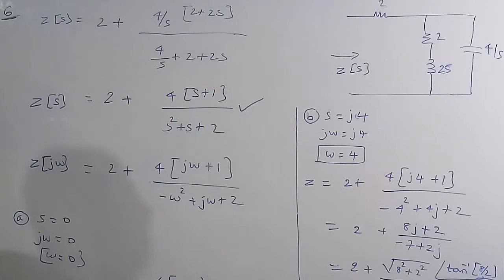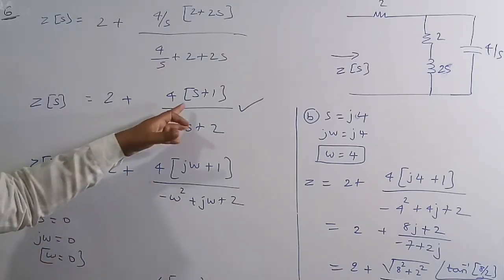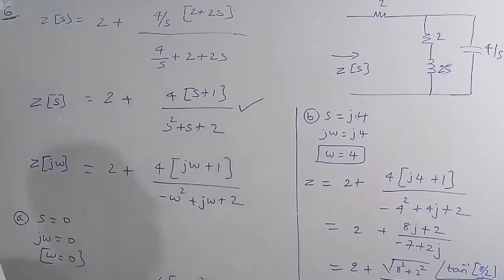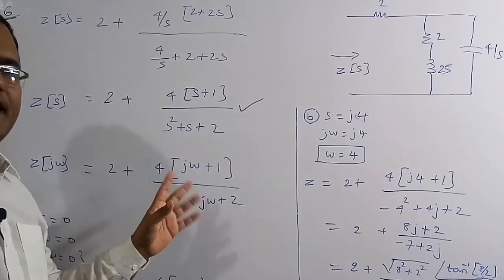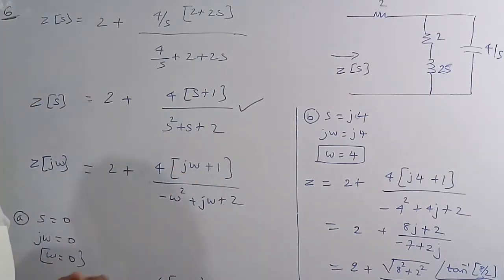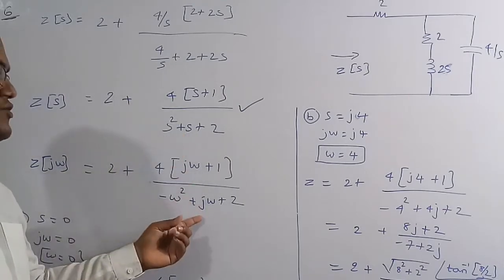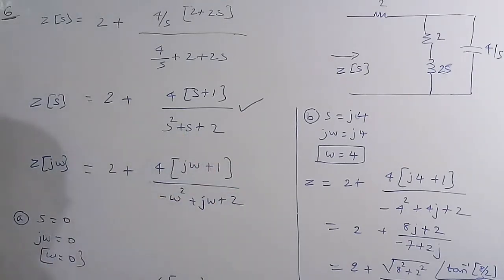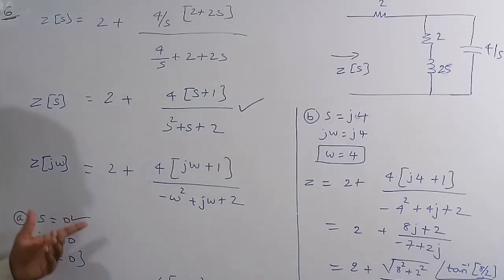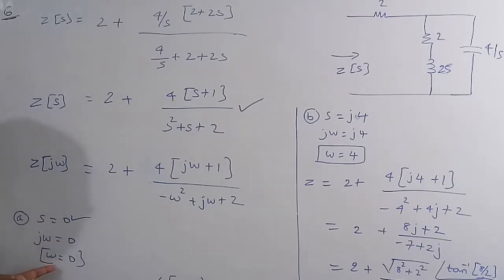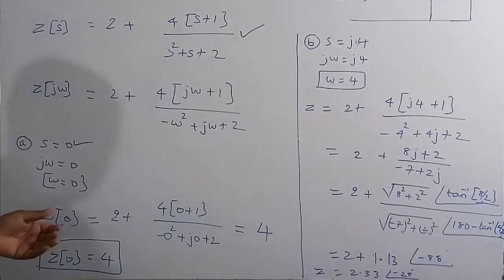Now, substituting s = jω, Z(jω) = 2 + 4(jω+1) / (−ω²+jω+2). For the first case, s=0 means jω=0, so ω=0. We substitute ω=0 everywhere in the expression.